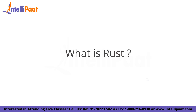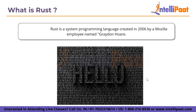So let's start with what is Rust. Rust is a system programming language created in 2006 by Mozilla employee named Graydon Hoyer. This language is described by him as safe, concurrent, and a practical language that supports the functional and imperative paradigms. Rust syntax is similar to that of C++. Rust is free and open source software, which means that anyone can use it for free and the source code is openly shared so that people can improve the software design.